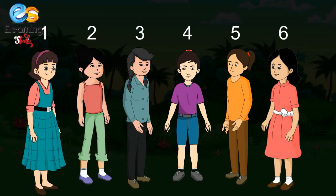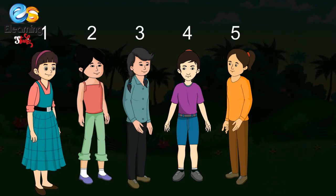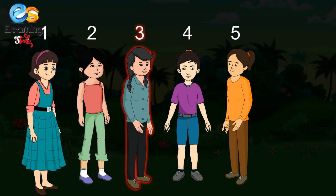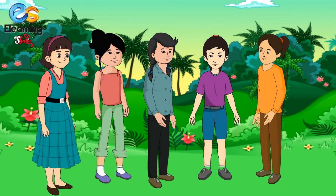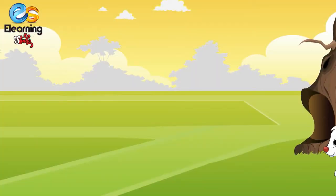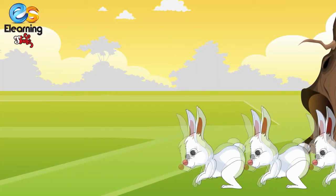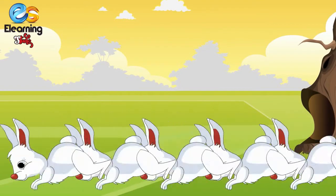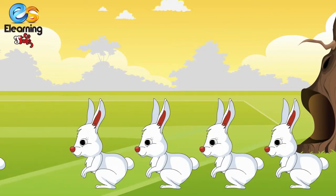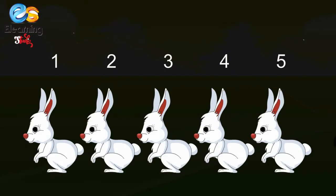Six girls playing in a park — one goes home. How many are left? Six girls minus one girl is equal to five. One, two, three, four, five — five girls are left.